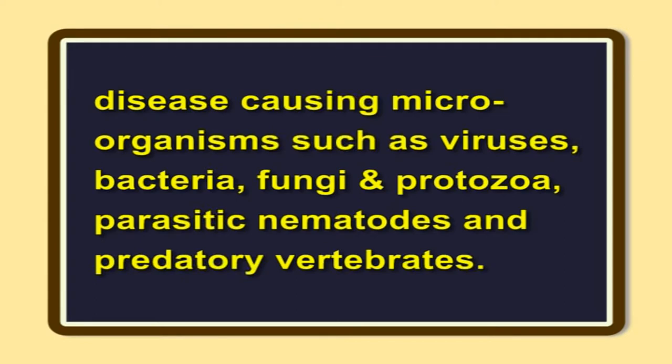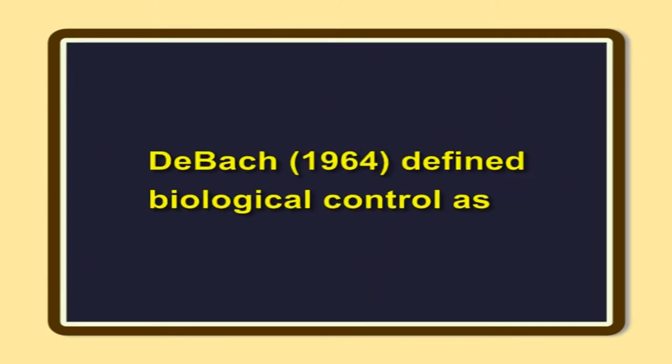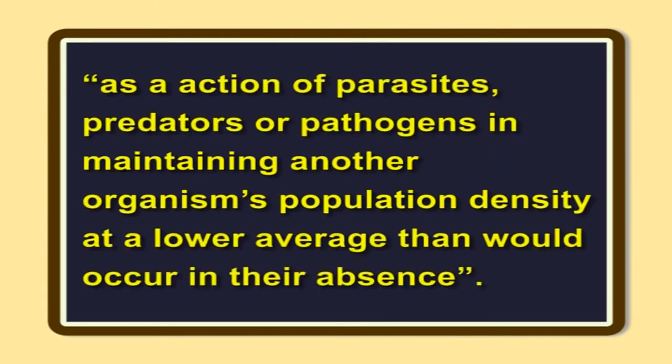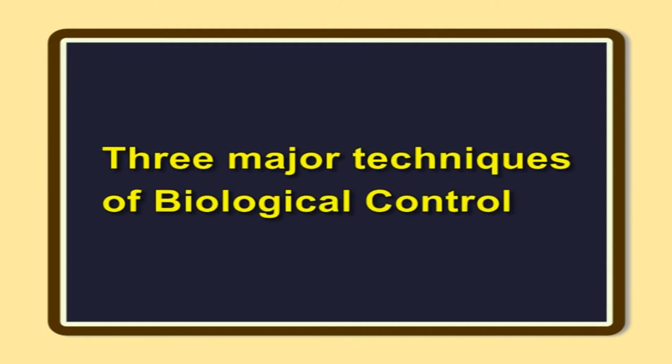DeBach in 1964 defined biological control as the action of parasites, predators, or pathogens in maintaining another organism's population density at a lower average than would occur in their absence. Biological control of insect pests by utilizing microorganisms is also called microbial control. However, in sericulture, it is not recommended owing to contamination problems to silkworms.